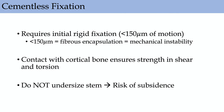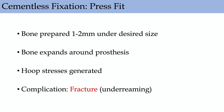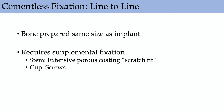Cementless fixation requires initial rigid fixation with less than 150 micrometers of motion. More motion leads to fibrous encapsulation or failure to ingrow. You need cortical contact and should not undersize the stem due to risk of subsidence. The bone expands around the prosthesis as you impact it — hoop stresses are generated and eventually mitigated. The complication for press-fit stems is fracture. Line-to-line fixation means bone prepared equals the implant size. Scratch fit applies to extensively porous-coated stems, which can be supplemented with screws.